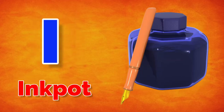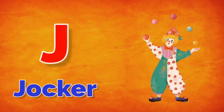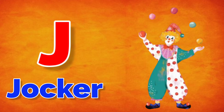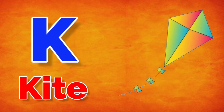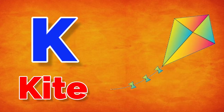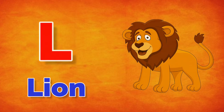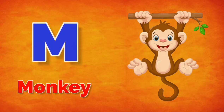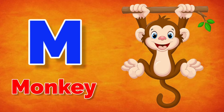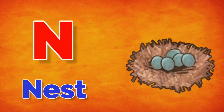J for joker, J for kite, I for lion, M for monkey, M for nest.